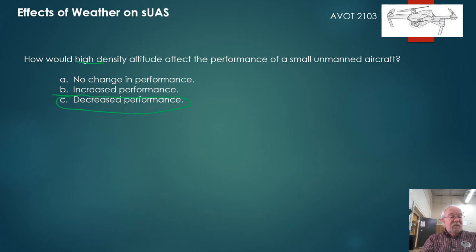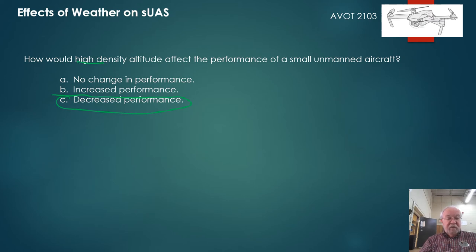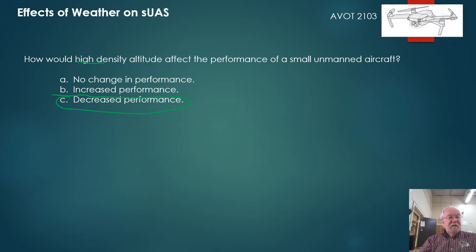Another way the question might be phrased: which factor would tend to increase the density altitude at a given airport? Options might include increase in barometric pressure — no, that's thicker air. Increase in ambient temperature — yes, that's reasonable. Decrease in relative humidity — we haven't talked much about humidity, but the more moisture in the air, the further apart the molecules are and the thinner the air is. So humidity does affect density altitude — more humid air is thinner air. The answer must be increase in temperature.